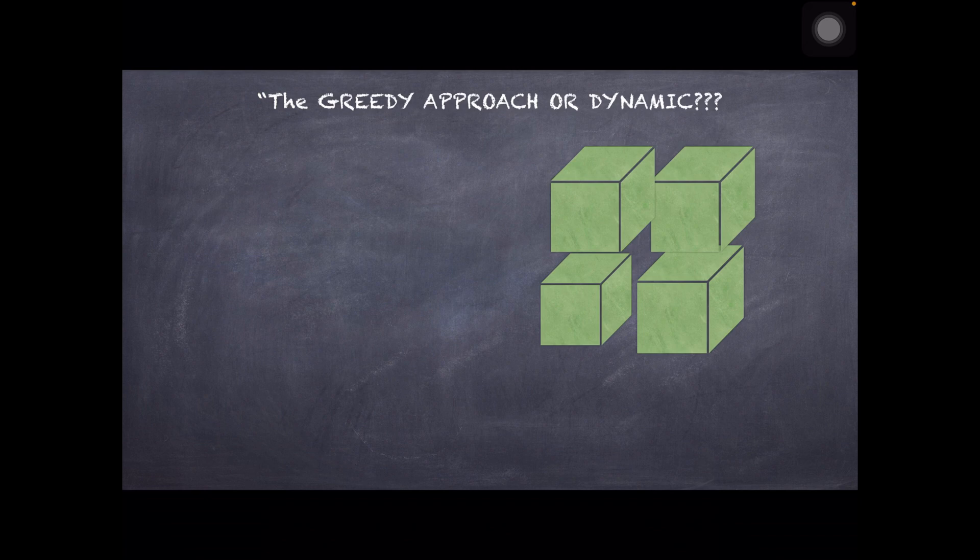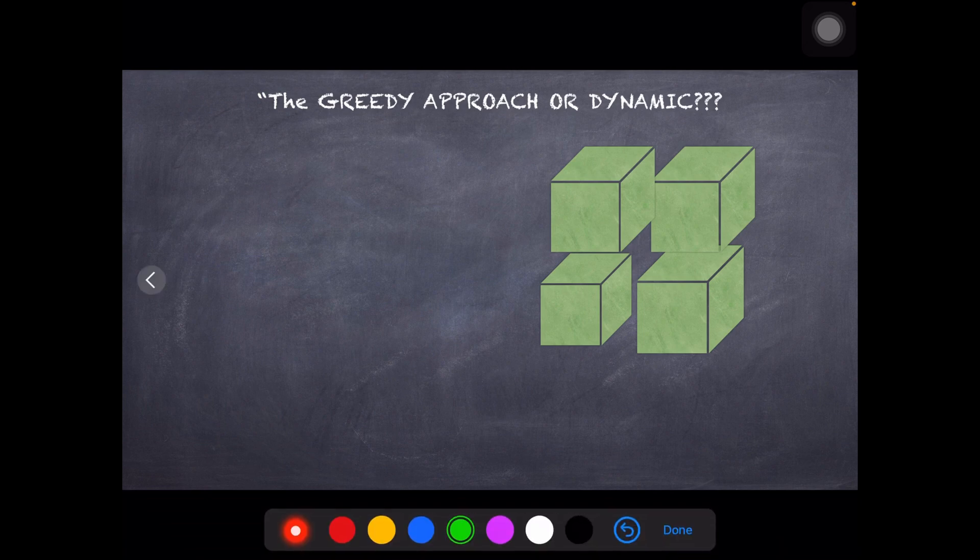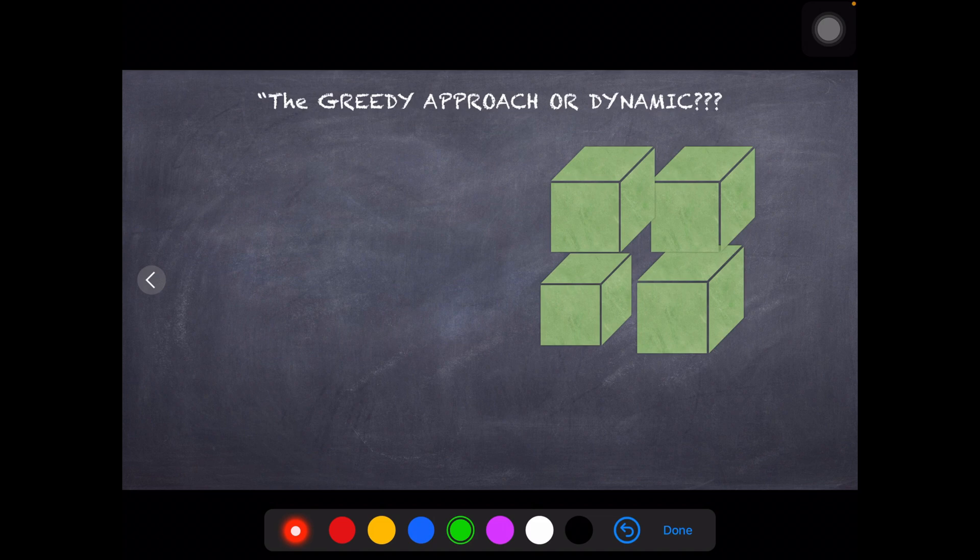Understand how to approach such a problem where whenever we are doing optimization - using minimizing something or maximizing something - here in this problem we are using both. We'll have to minimize and maximize two different things and then come to a desired solution. Any doubts, do say to me in the comment section below.